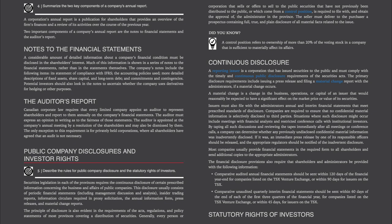The Annual Report. A corporation's annual report is a publication for shareholders that provides an overview of the firm's finances and a review of its activities over the course of the previous year. Two important components of a company's annual report are the notes to financial statements and the auditor's report. Notes to the Financial Statements. A considerable amount of detailed information about a company's financial condition must be disclosed in the shareholder's interest. The company's notes include: its statement of compliance with IFRS, the accounting policies used, more detailed descriptions of fixed assets, share capital and long-term debt, and commitments and contingencies. Potential investors should also look into the notes to ascertain whether the company uses derivatives for hedging or other purposes.